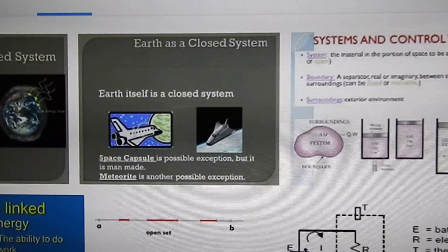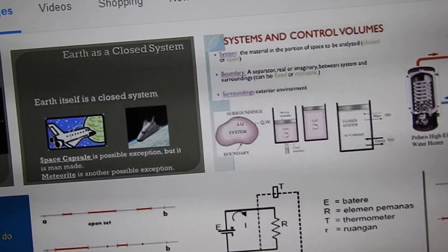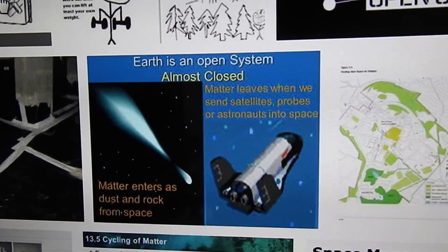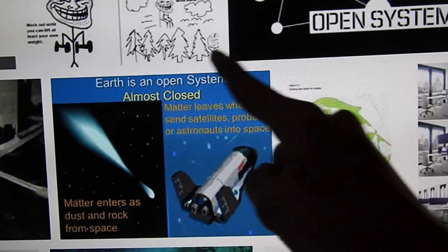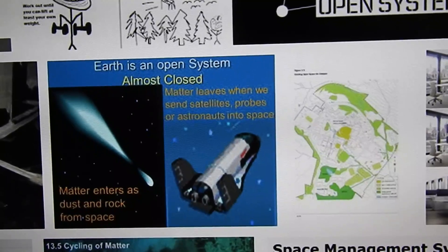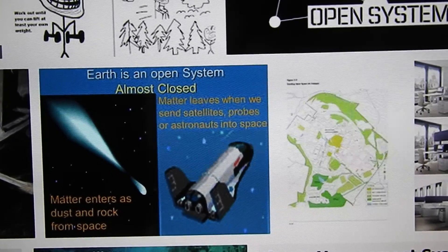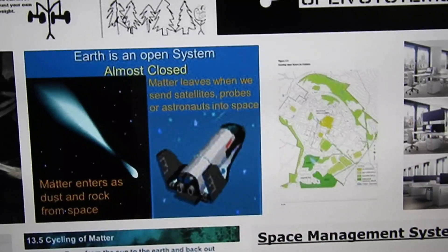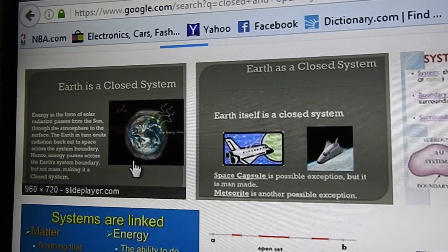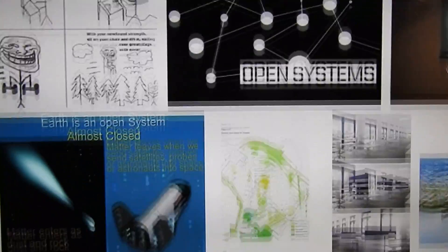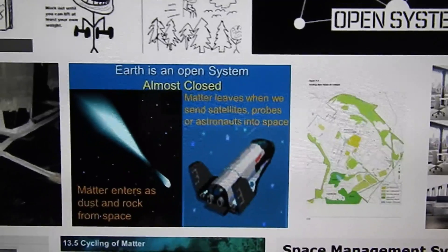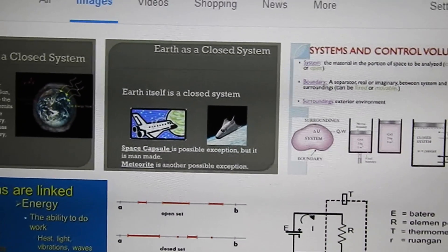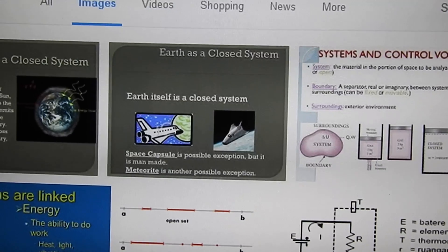A meteorite is another possible exception. There are a lot of exceptions and variables. Is Earth an open system? It's almost closed — matter enters as dust and rock from space, matter leaves when we send satellites, probes, or astronauts into space. So is Earth closed, almost closed, or open? Bill Nye says it's closed and we can't leave — so the moon landings aren't real. Nassim Haramein says it's open.